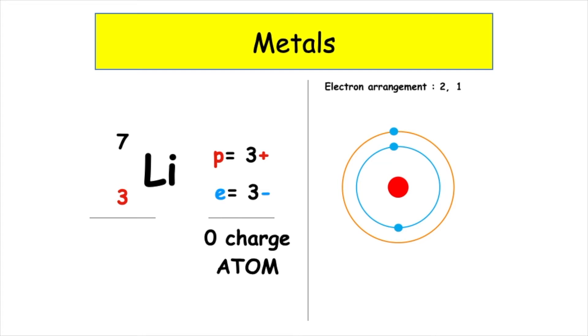If we look up the mass number in the data booklet, it's got a mass number of 7. 7 minus 3 tells us we've got 4 neutrons.